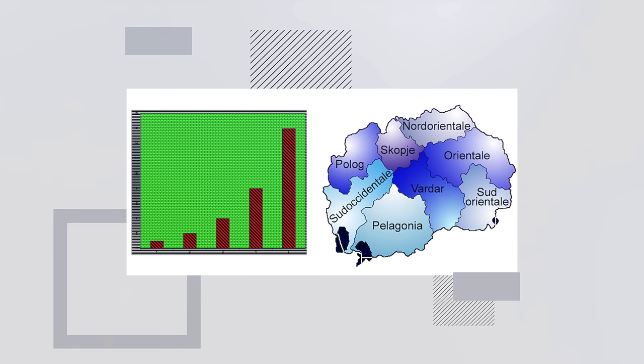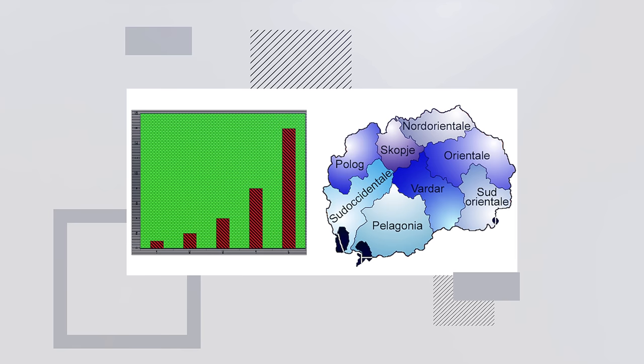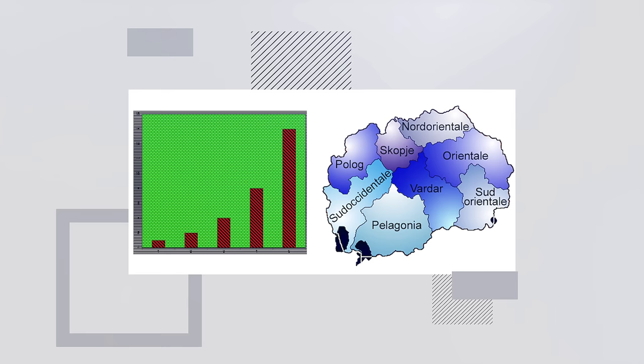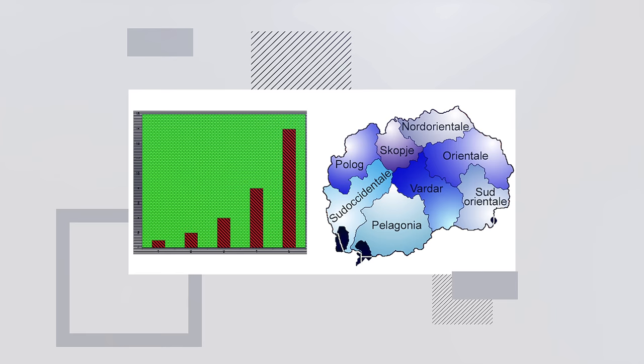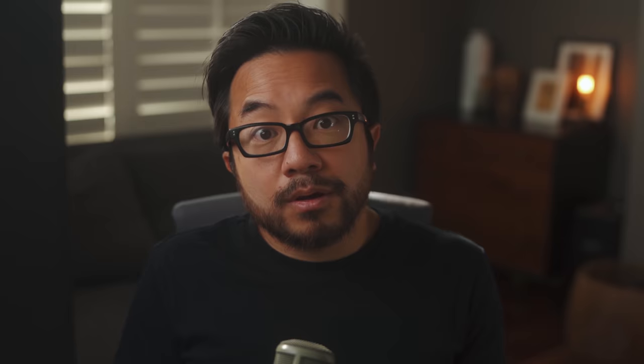For every color, line or pattern, I want to know there was a reason and intention for it. Look at all of this stuff on the page — that's chart junk. Why a green background? What does that pattern mean? Why red for the bars? It's noise, an aesthetic choice that signifies nothing. For the map on the right, is there any reason why there's a radial gradient? Why those colors? If it doesn't mean anything, it's junk. So how do we avoid it? Here's the simple principle: if it can be removed without taking away any meaning, remove it. The evolution of culture marches with the elimination of ornament from useful objects — that's what architect Adolph Loos said. Ornament is not signal.